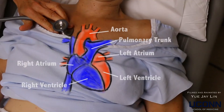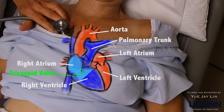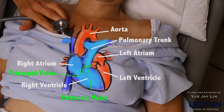Here's a super simplified anatomy of the heart. When listening to the heart, we are interested in the blood flow from the four valves. Blood comes in the right atrium and goes through the tricuspid valve to the right ventricle, and then it goes through the pulmonic valve to the pulmonary trunk.